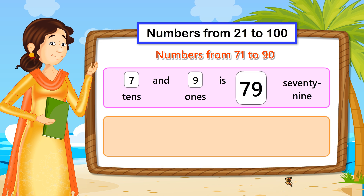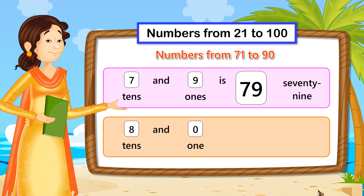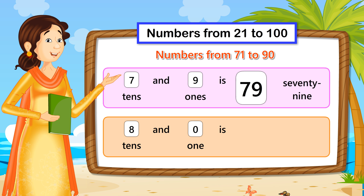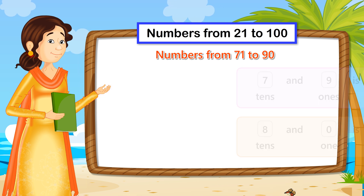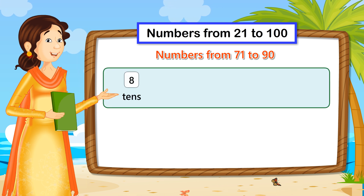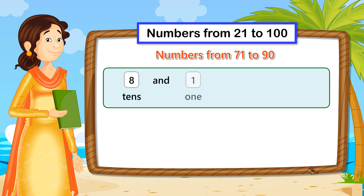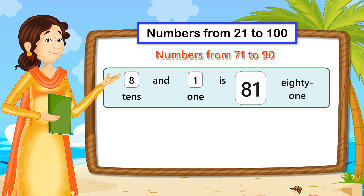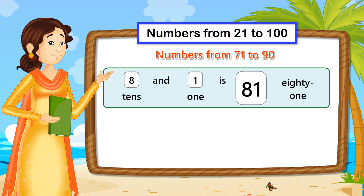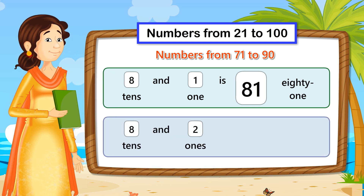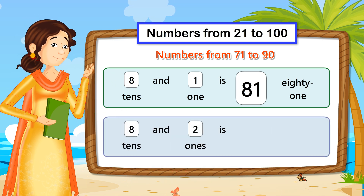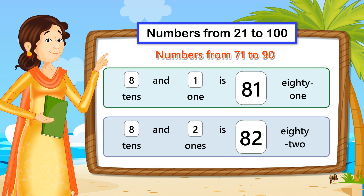8 tenths and 0 ones is 80. 8 tenths and 1 one is 81. 8 tenths and 2 ones is 82.